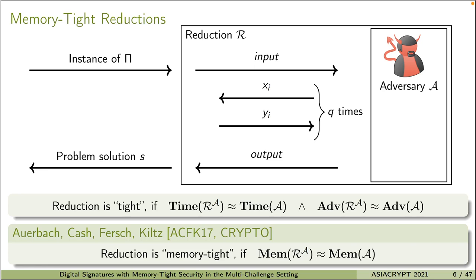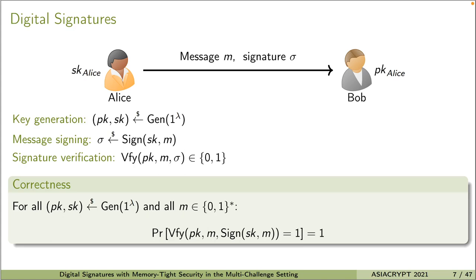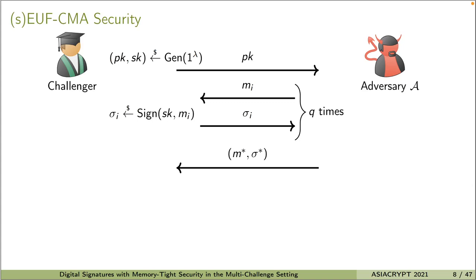Providing memory-tight reductions for cryptographic schemes is of great importance, especially when the underlying problem is a memory-sensitive one. In this talk, we will call a reduction fully tight if it is tight in terms of time, advantage, and memory. Next, let us briefly recall the public-key primitive of digital signatures. A digital signature scheme allows a secret key holder to authenticate any message by generating a signature for this message using the secret key. Anyone who has the corresponding public key can publicly verify the validity of the signature for this message. For security of digital signatures, the most commonly accepted security is the existential unforgeability under chosen message attack security, or UF-CMA security.